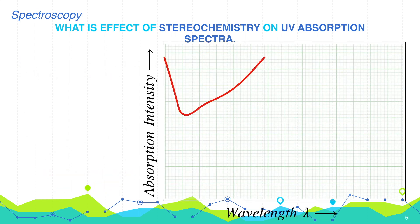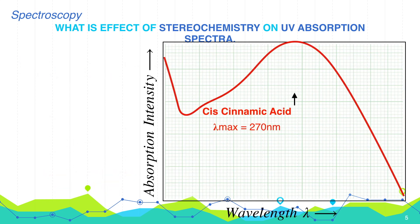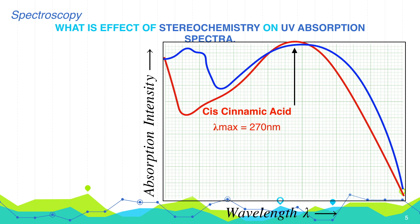This can be clearly seen from the graph, which shows cis-cinnamic acid in the red colored line and trans-cinnamic acid in the blue colored line. The shift is not very large — it is only 4 nanometers.